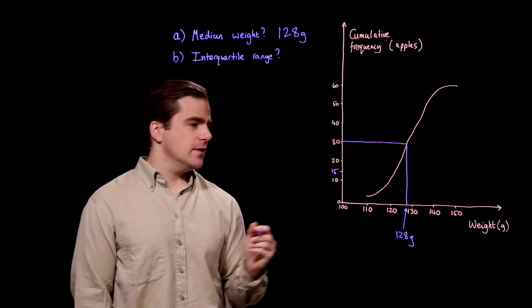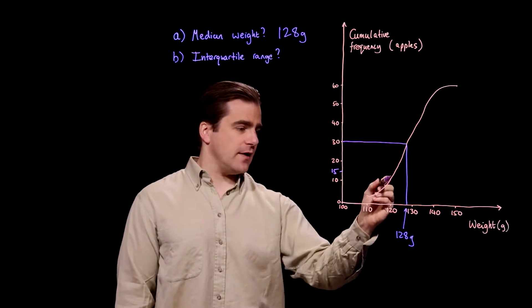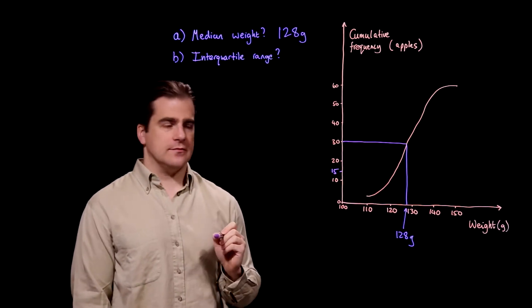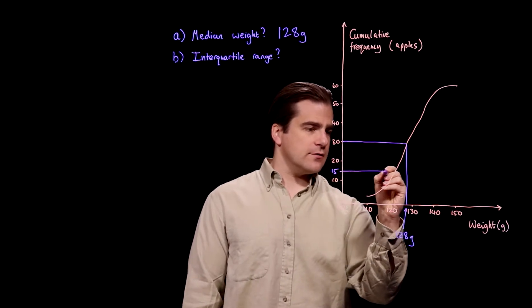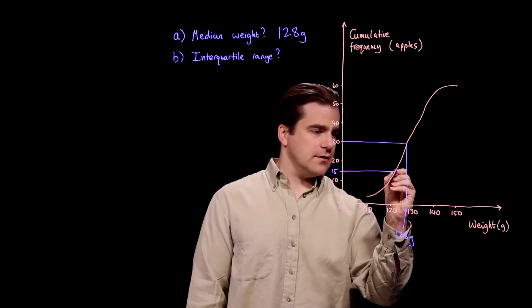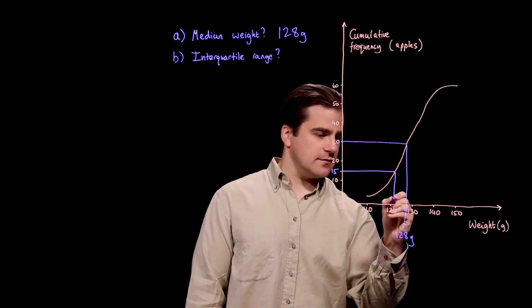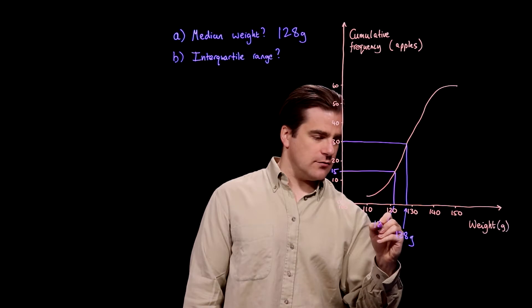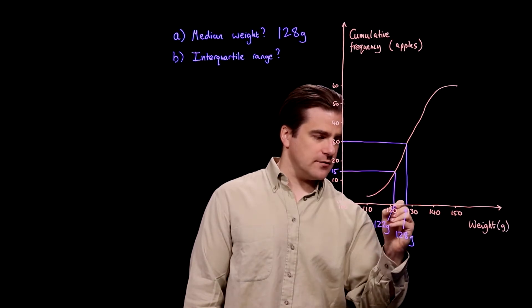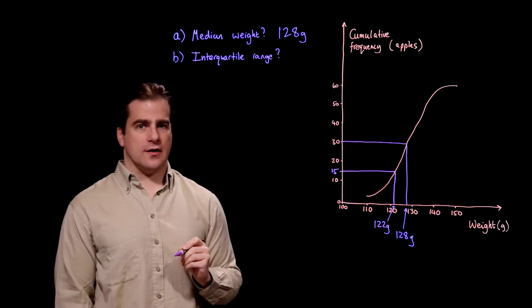Okay. And you go across and down from there and that gives you the lower quartile value. So, across and down from 15 and we get 122 grams. And that's the lower quartile.